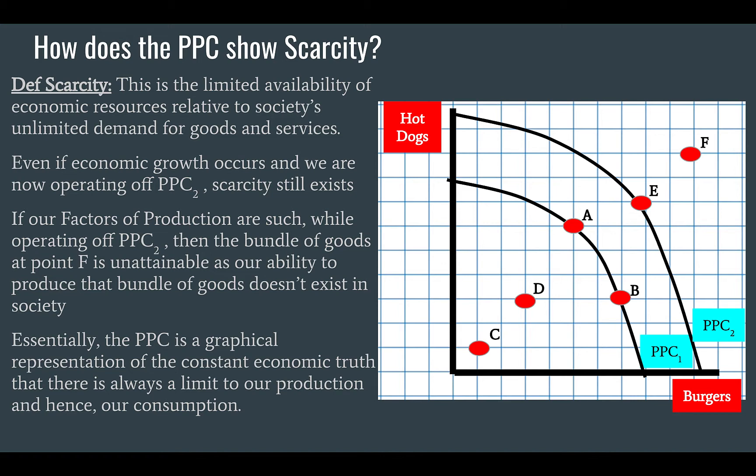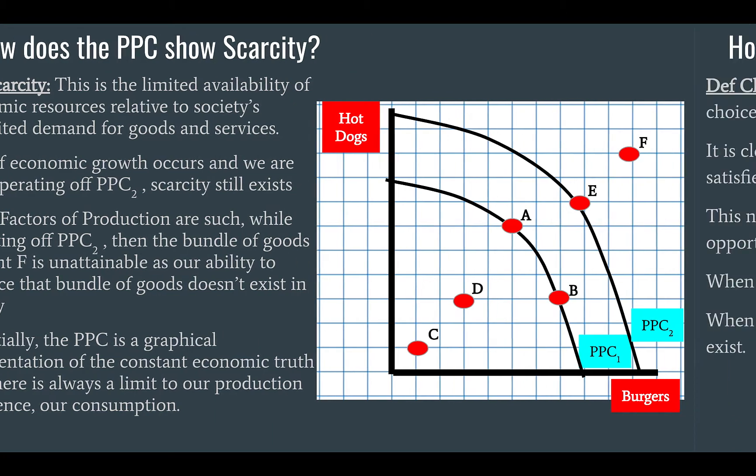Essentially the PPC — the production possibilities curve, also called the production possibilities frontier — is a graphical representation of the constant, immutable economic truth: that there is always a limit to our production and hence there is a limit to our consumption.